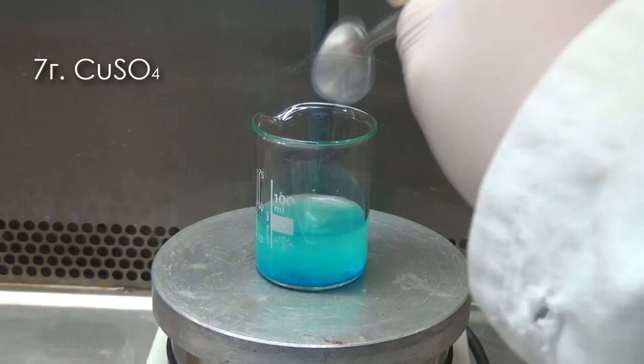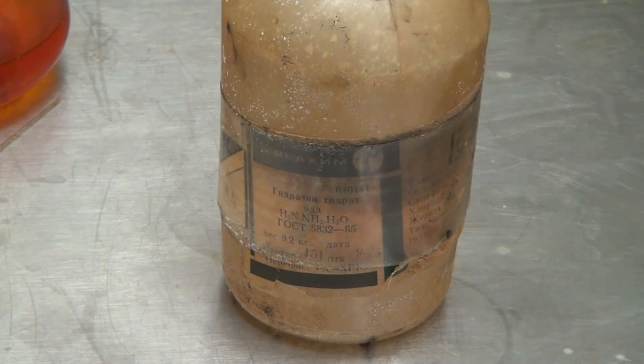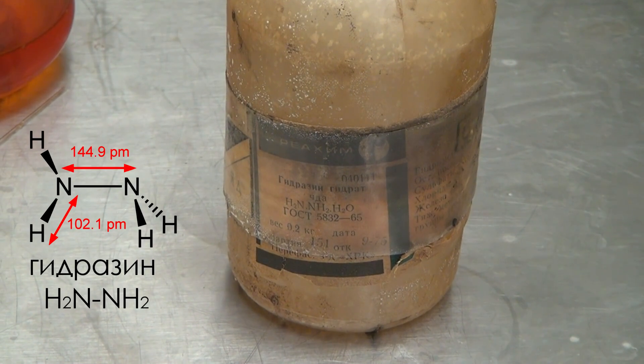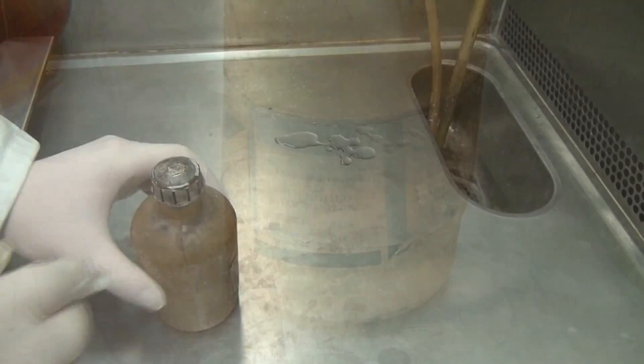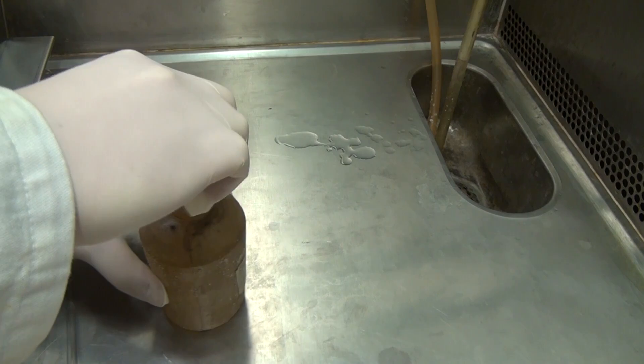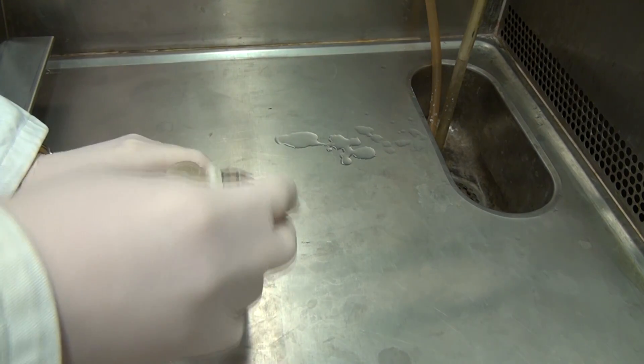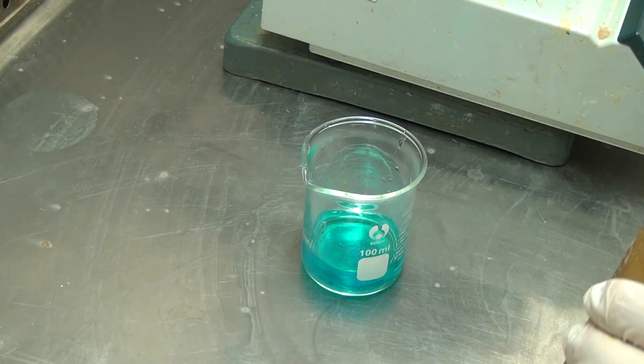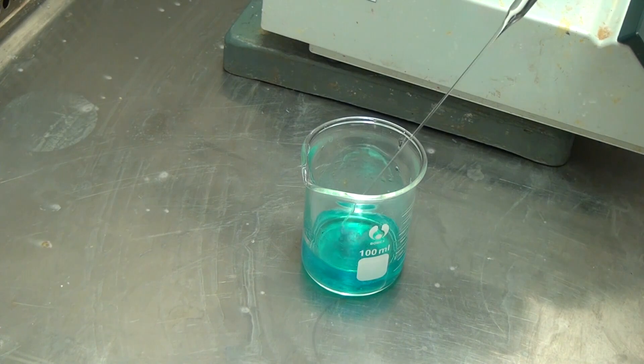We will restore copper to the metallic state using hydrazine. In our university, we found a pretty old bottle with hydrazine, and I hope that it hasn't reached the end of its shelf life yet. To obtain metallic copper, add a little hydrazine to the beaker with copper sulfate.